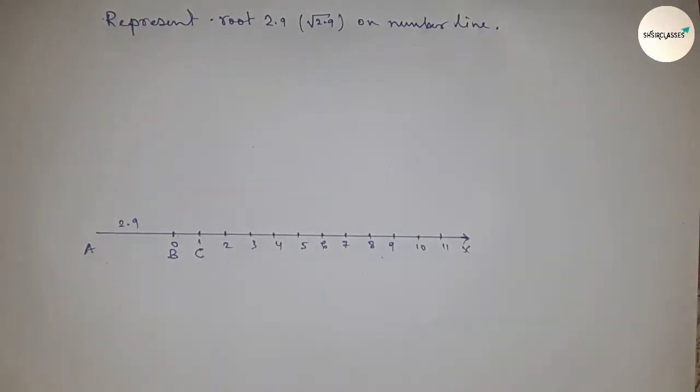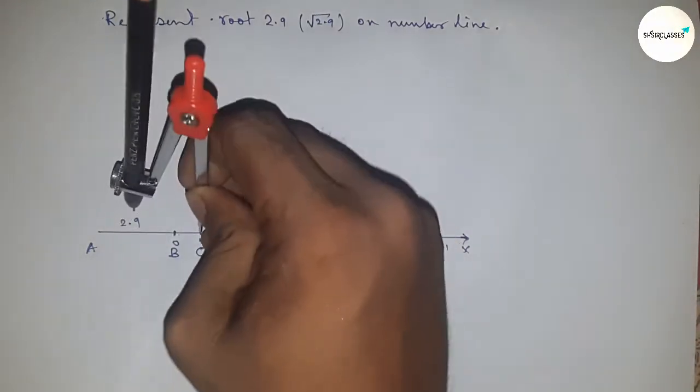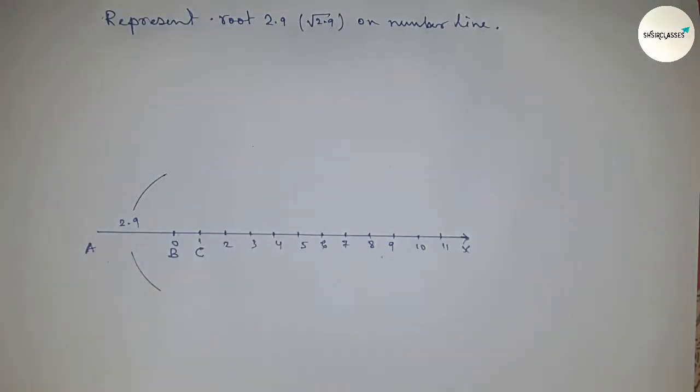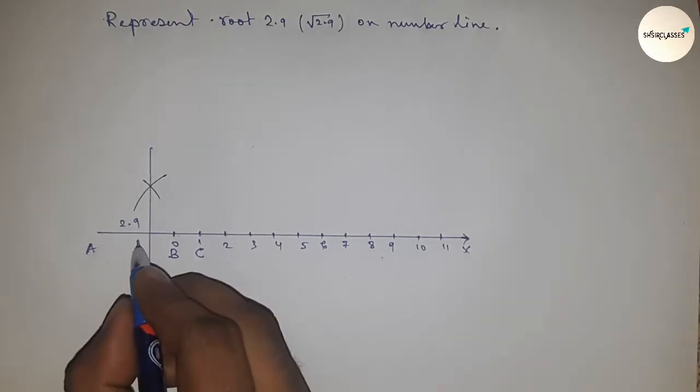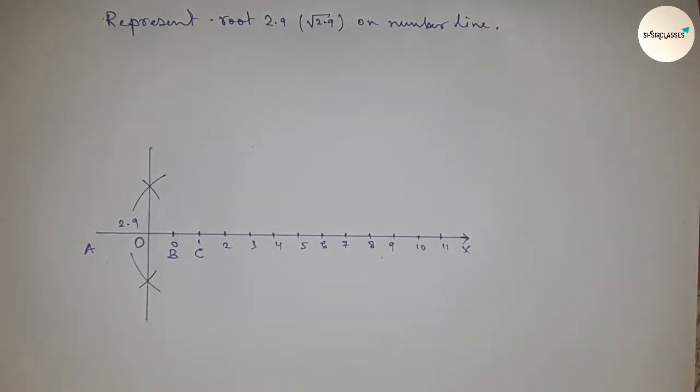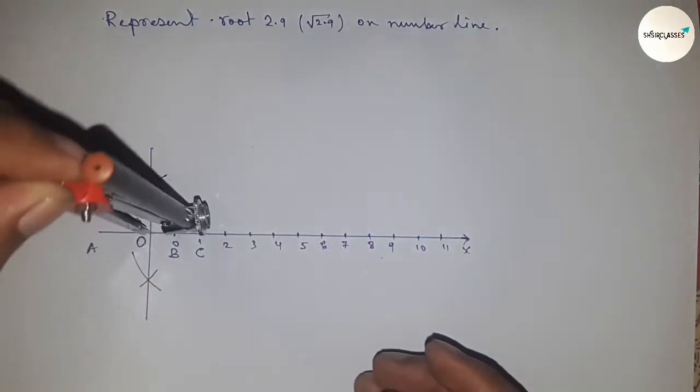This is point C. Next we need to bisect the line AC, so taking greater than half of AC and drawing arcs with the same length. Put the compass here and cut the arcs this way. Then join them, which meets the line AC at point O.